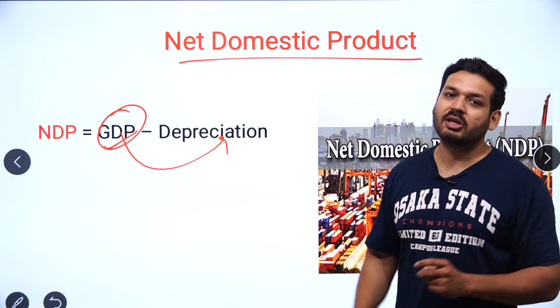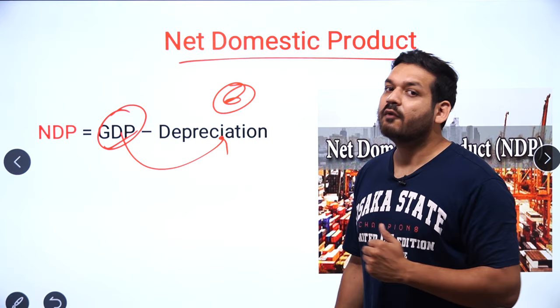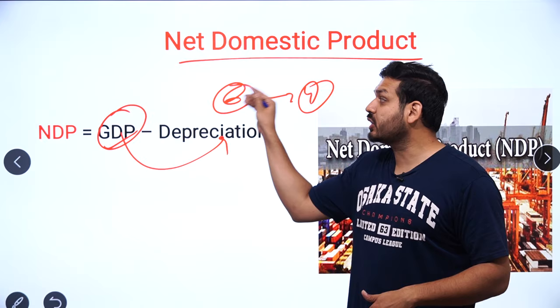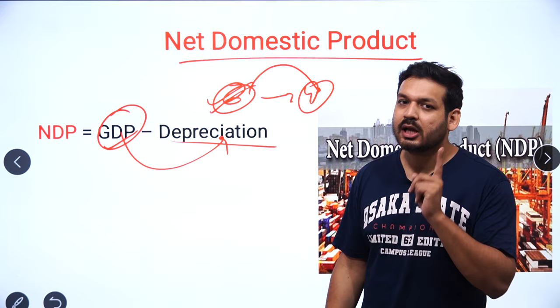Depreciation means: I made a car worth 6 lakh rupees, but after one month its value depreciated to 4 lakh rupees. So it depreciated by 2 lakhs. GDP is calculated on the cost of the final product — 6 lakhs. But actually, 2 lakhs were depreciated. So the depreciation cost is minus from GDP, and what you get is NDP — Net Domestic Product.